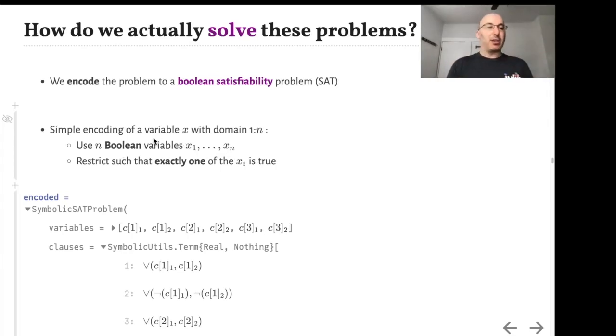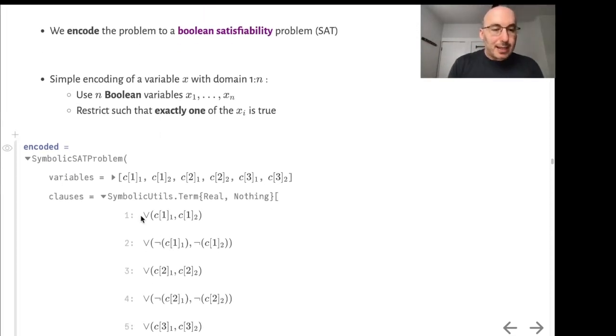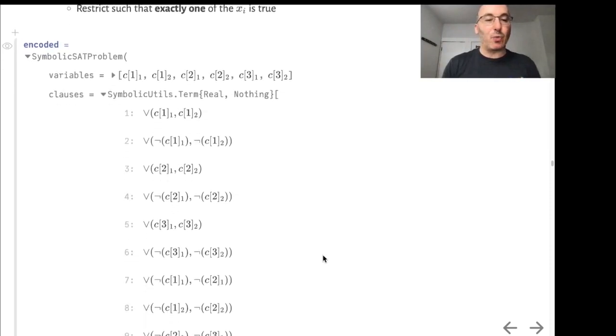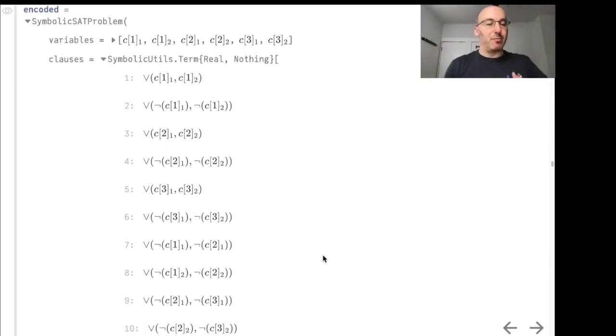Let's see what that looks like when we encode the problem. We get these clauses which are ORs. This v is an OR symbol. So c1_1 is true or c1_2 is true. c1_1 means that the color of vertex 1 is the first color and c1_2 means it's the second color. Either of those must be true because it has to have one of the two colors. But we don't want it to have both colors simultaneously, so we have that either not c1_1 or not c1_2.